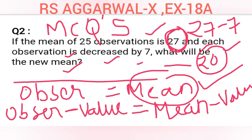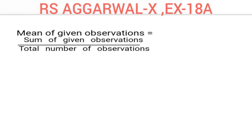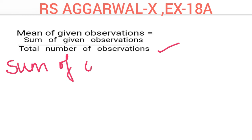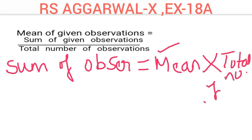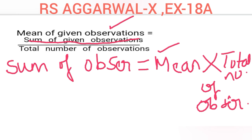For the detailed solution: the mean formula is sum of observations divided by total number of observations. So sum of observations equals mean multiplied by total number of observations. Here, sum of observations = 27 × 25 = 675.